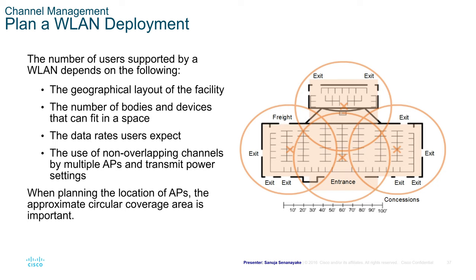When planning a WLAN deployment, the number of users supported depends on: the geographical layout of the facility, the number of bodies and devices in a space, the data rates users expect, and the use of non-overlapping channels by multiple APs and transmitting power. You can increase transmit power for more coverage, but you should also consider distributing users across multiple APs to create load balancing.